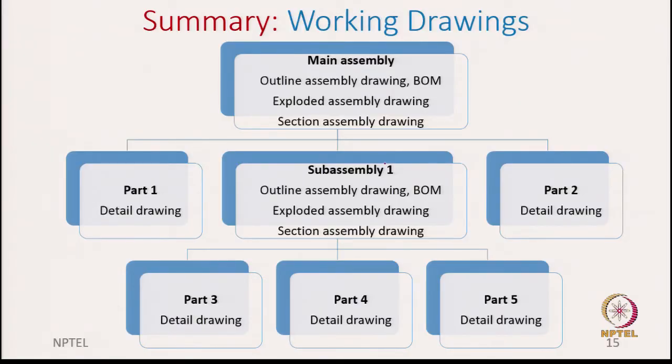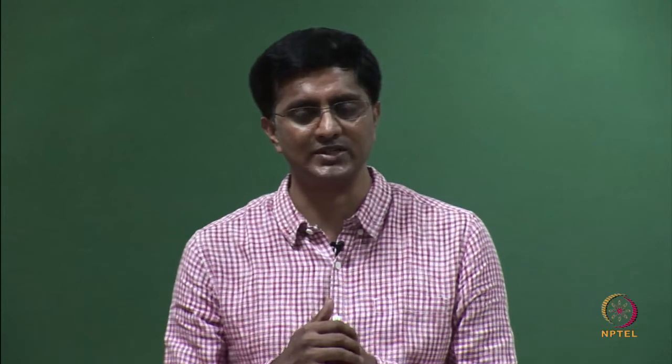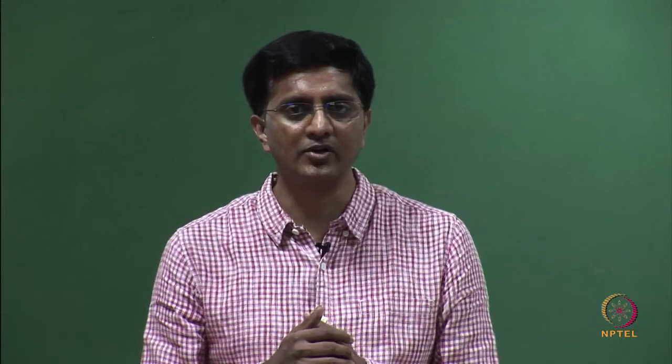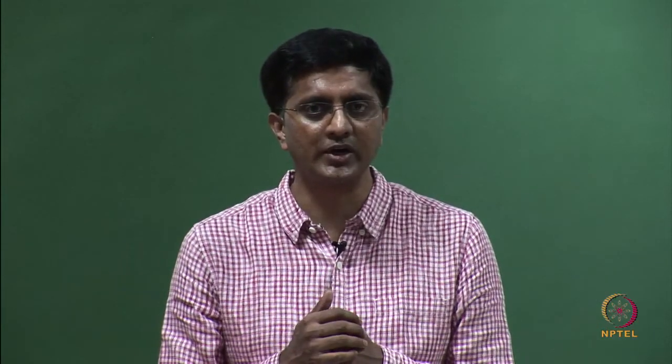Coming back to working drawings, in addition to these 3 kinds of assembly drawings, we also have the bill of materials. And whenever we have an assembly, we mention that it is composed of individual parts as well as sub-assemblies, depending on how complex the device is. For the car example, we need to go to sub-assemblies — otherwise there are thousands of parts which we cannot show in a single assembly.